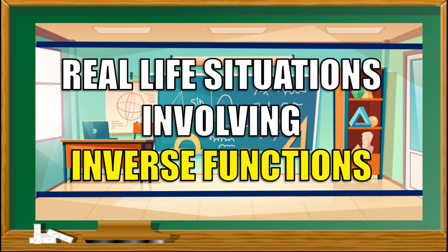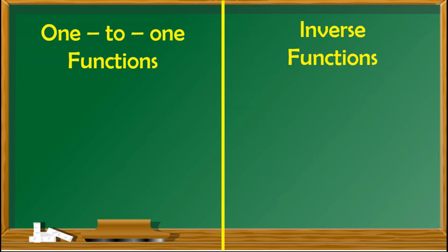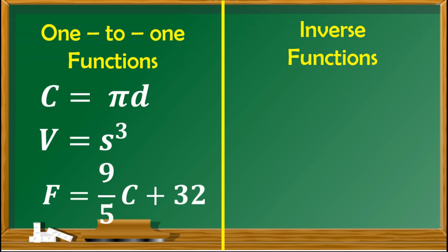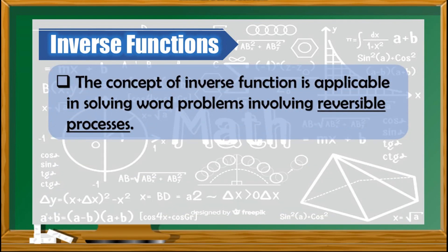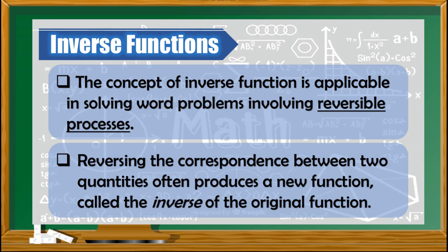Let us now have real-life situations involving inverse functions. We have formulas for one-to-one functions: circumference equals pi times diameter, volume of a cube equals side cubed, and temperature in Fahrenheit equals 9/5 Celsius plus 32. Manipulating each formula gives us the inverse functions: diameter equals circumference divided by pi, side equals the cube root of volume, and Celsius equals 5/9 times (F minus 32). The concept of inverse function is applicable in solving word problems involving reversible processes, where reversing the correspondence between two quantities produces a new function called the inverse of the original function.